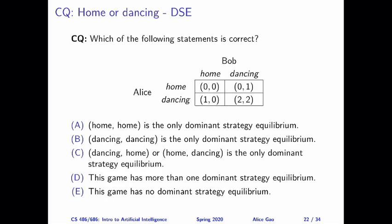The correct answer is B — the only dominant strategy equilibrium is dancing, dancing. So if we are making a prediction based on the dominant strategy equilibrium concept, we predict that both players will choose to go dancing. The detailed explanation is included in a separate video. That's everything for this video. Thank you very much for watching. I will see you in the next video. Bye for now.